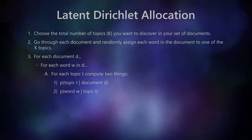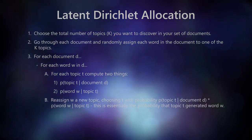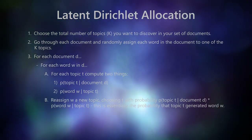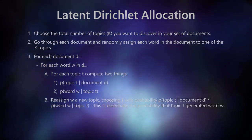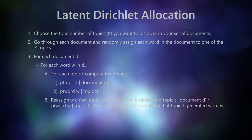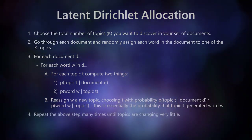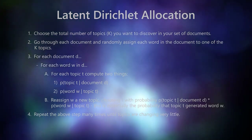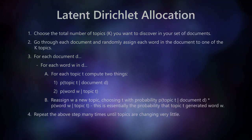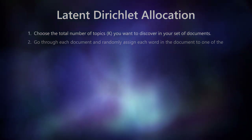Number 2: the proportion of assignments to topic T over all documents that come from this word. Next we're going to reassign the word a new topic, choosing the topic with the probability P(topic T | document D) times P(word W | topic T). This is essentially the probability that topic T has generated word W. This is where you get a Dirichlet distribution, as the probabilities across k topics will all add to one. And finally, Step 4: we repeat the above step many times until the topics are changing very little. You'll be left with each word in each document assigned to a topic, and you should notice that the topics seem intelligently chosen and each carry a common theme.